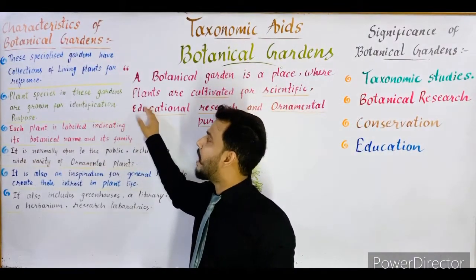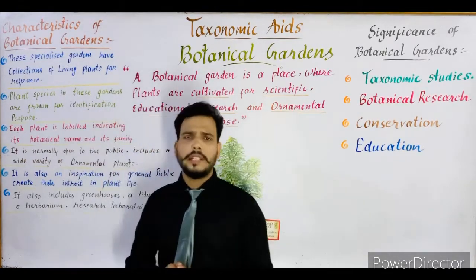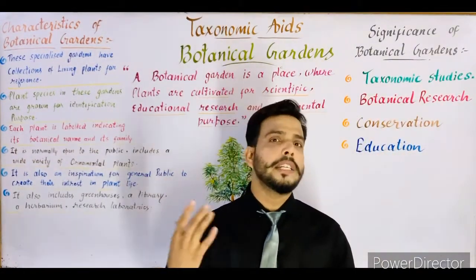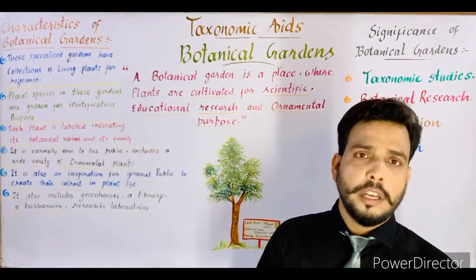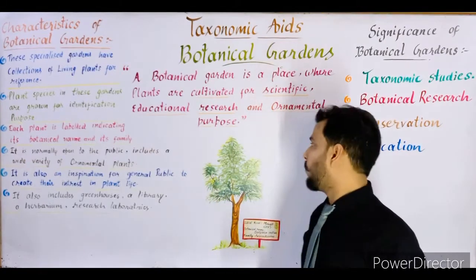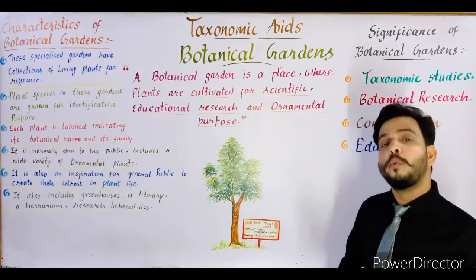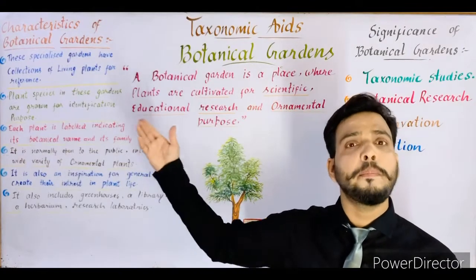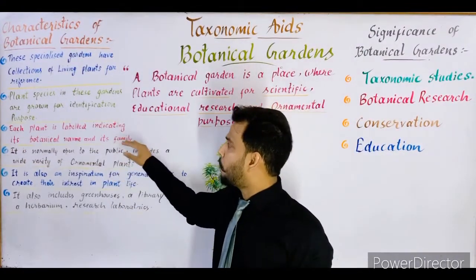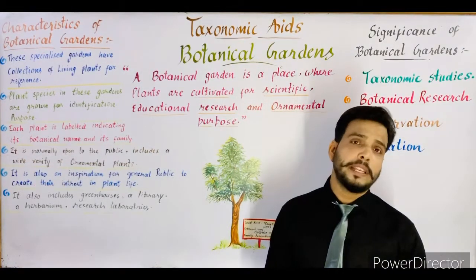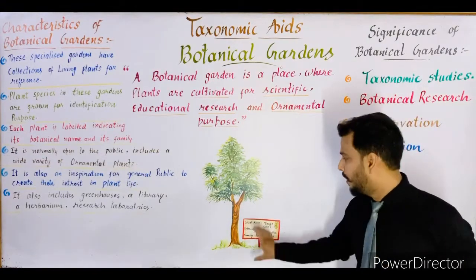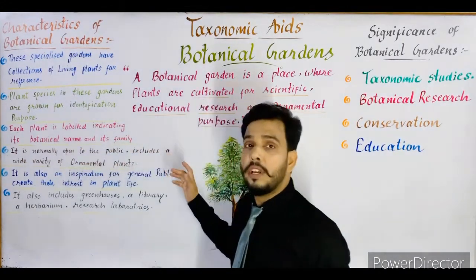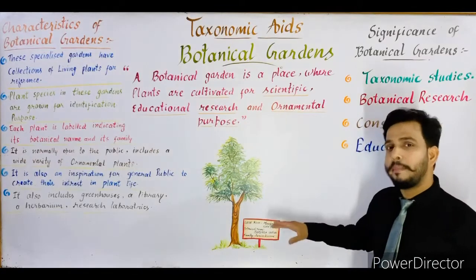The next characteristic is that plant species in these gardens are grown for identification purposes. If you don't know about any plant, you can easily identify it by visiting a botanical garden — you can find the name and family of that plant. Each plant has a label just below it indicating its botanical name and its family.